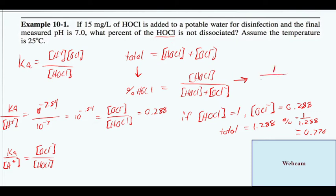You can simplify that to be one over, we just divide the top and the bottom by HOCl. It's gonna be 1 over 1 plus OCl- divided by HOCl, and then we can substitute straight into there.